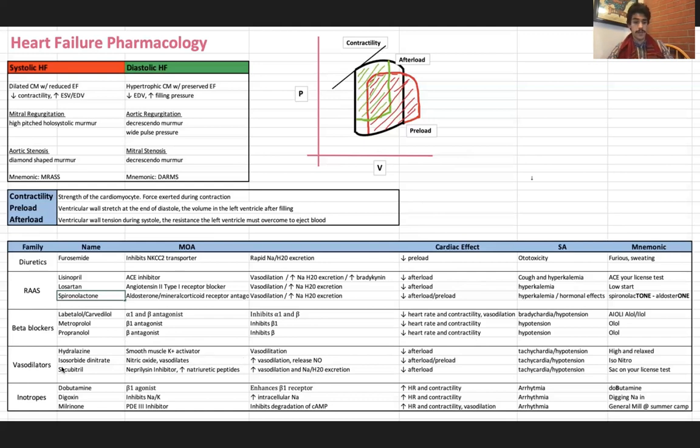Moving on to the vasodilators. The first vasodilator that we have in the lineup is hydralazine. Hydralazine, the mnemonic that I thought of, is just like high and relaxed. You know, you just had a good evening, you're high and relaxed, you're vasodilated. You have that smooth muscle potassium activator hydralazine. So what this is going to do is since it is a vasodilator, it is going to decrease afterload. And all of these vasodilators are going to decrease afterload because we have less resistance in our systemic vasculature, which is going to make it easier to eject out of that left ventricle. The second vasodilator is isosorbide dinitrate. Just a long word to get to nitric oxide, which is that potent vasodilator.